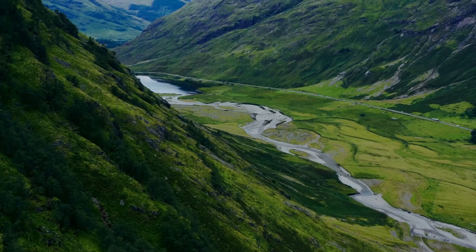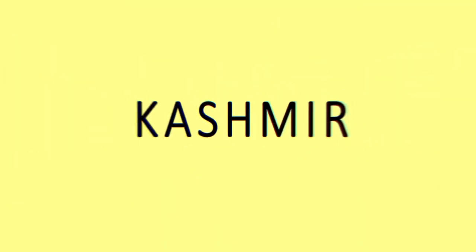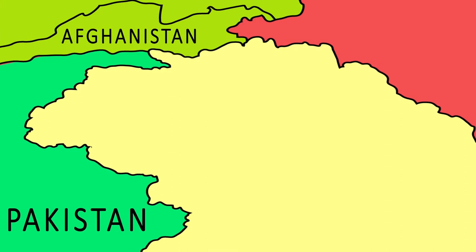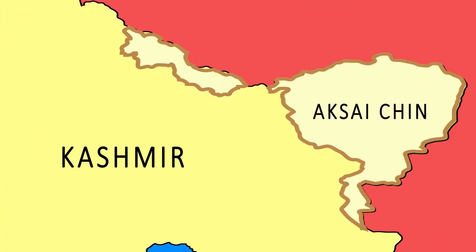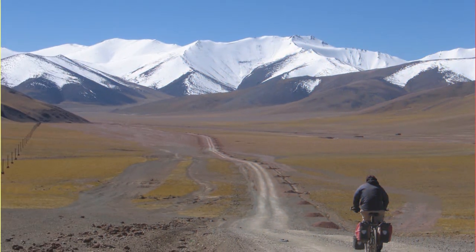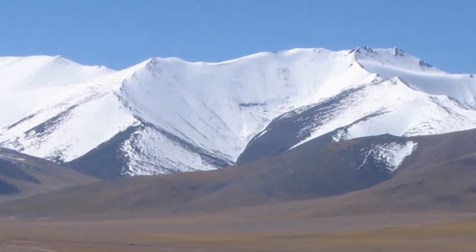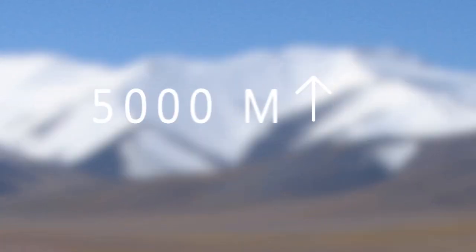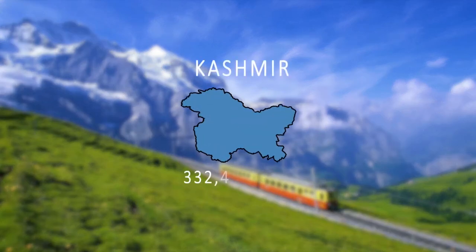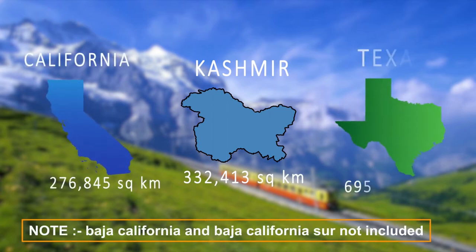The Kashmir region is bordered by China to the east, India to the south, Pakistan to the west, and Afghanistan to the north. Aksai Chin, which in Uyghur terms means China's desert of white stones, and is referred to as the Soda Plain, is a vast desert of salt at heights of 16,400 feet, which is 5,000 meters. The Kashmir region has a total area of 3,32,413 square kilometers, which is bigger than California but smaller than Texas.